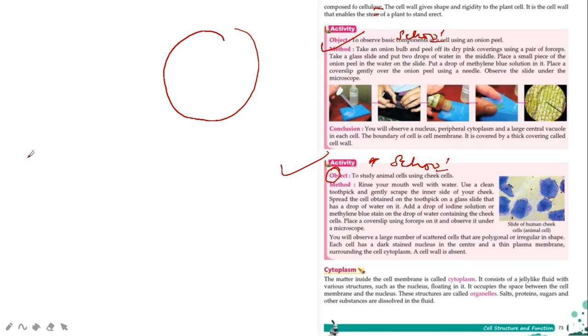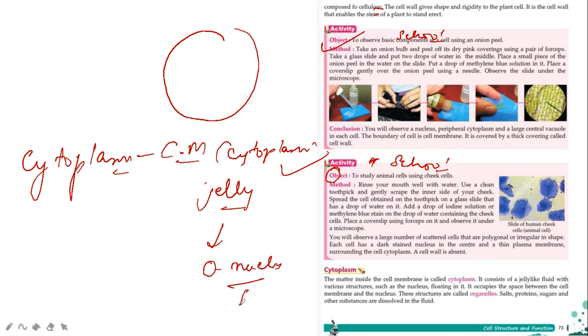Now what is cytoplasm? Next topic comes, what is cytoplasm? This is also a cell type. The matter inside the cell membrane, whatever matter is inside the cell membrane, we call it cytoplasm. In the cytoplasm there is a jelly-like fluid. What is the jelly-like fluid? Which the nucleus floats in, and what are the cell organelles present? Salt, proteins, sugar and other substances are dissolved in the fluid.